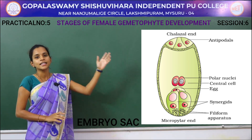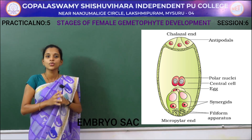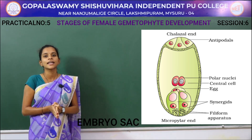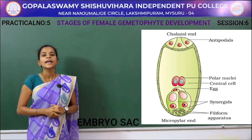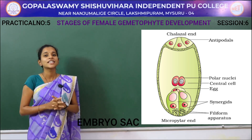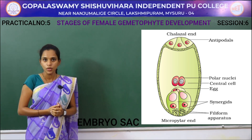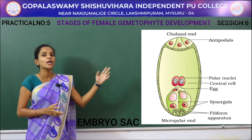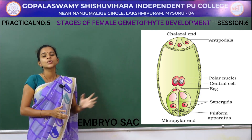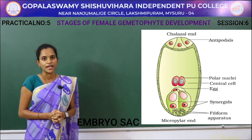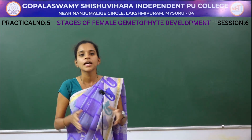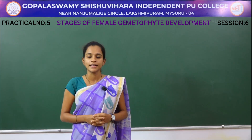The chalazal end contains three cells called antipodal cells. The center contains two polar nuclei. The lower micropylar region has two types of cells: two synergids, which help guide the pollen tube with the male nuclei, and one egg cell with a haploid nucleus. These are the different stages of female gametophyte development. In this session we discussed the VS of ovule or megasporangium and the stages of female gametophyte development.